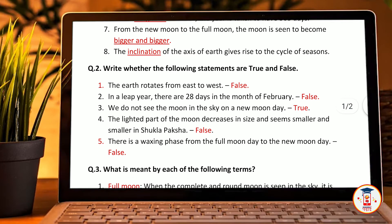Now, write whether the following statements are true or false. First: the earth rotates from east to west. The answer is false — the earth rotates from west to east.